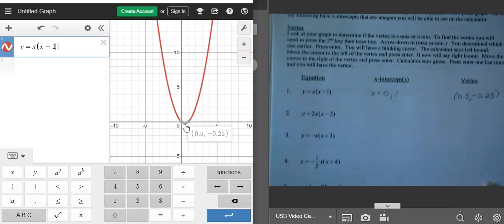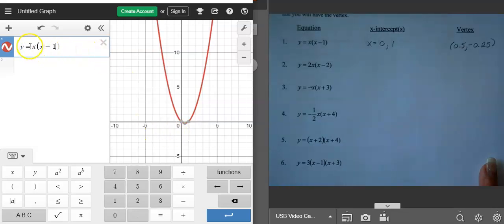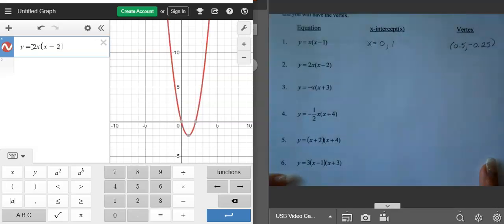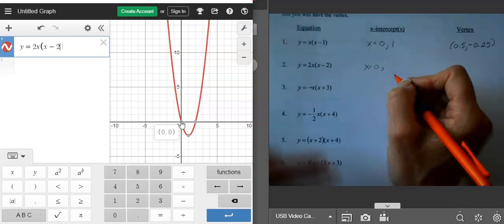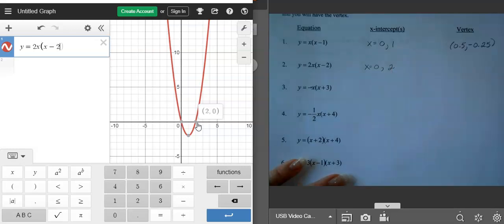On our second equation, let's go ahead and put that in Desmos. So I have 2x, and then I have x minus 2. And I'm going to graph it. Then if you scroll over here, you can see it crosses when x is 0. And the other spot that it crosses is at 2, 0. So those are my two x-intercepts. The y-values are 0, I'm not writing the y-values for those. I'm just looking at where it crosses the x-axis.